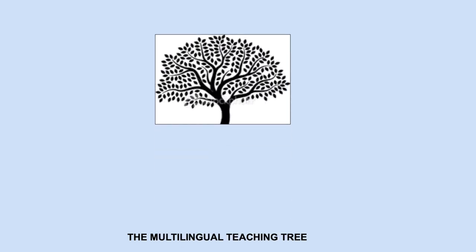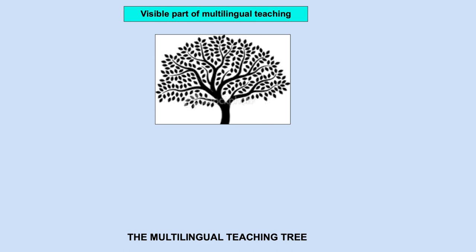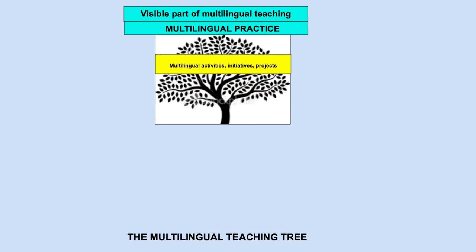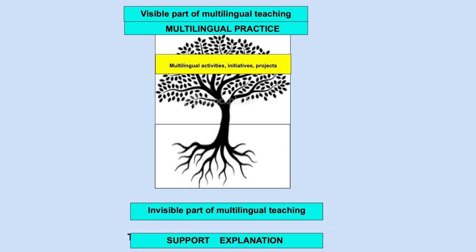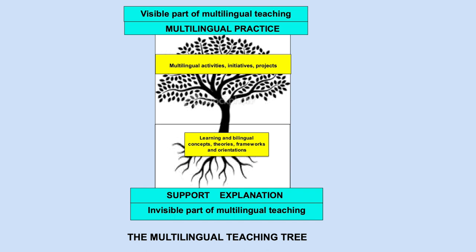Like the simple tree, the multilingual teaching tree has two parts. One part of the multilingual teaching tree is visible. This includes multilingual practice, classroom activities, initiatives, and projects. The other part of the multilingual teaching tree is invisible. It includes bilingual and learning theories, frameworks, and orientations that support and explain this pedagogy. Let's have a closer look at the invisible support of multilingual teaching.